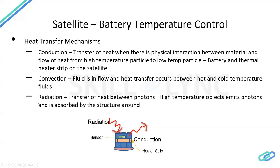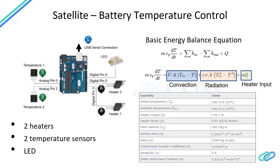Radiation is when a high-temperature object — like the sun — emits photons and transfers heat. Any very high-temperature object radiates heat outward. In our satellite battery problem, we have conduction happening because of the heater placed on the battery, and radiation coming from the sun since it's a high-temperature object emitting heat onto the battery. Let's now go into the first step of modeling this system using convection and radiation.